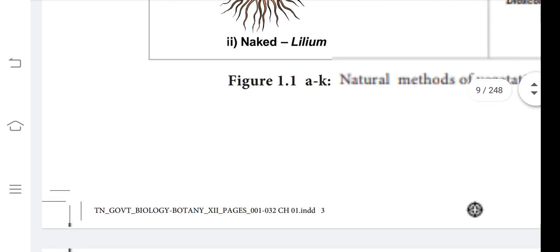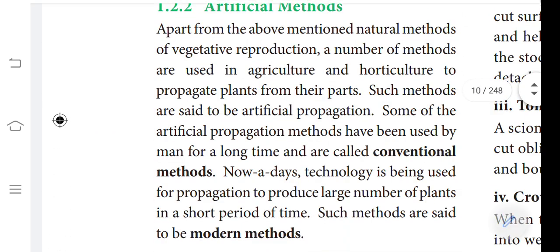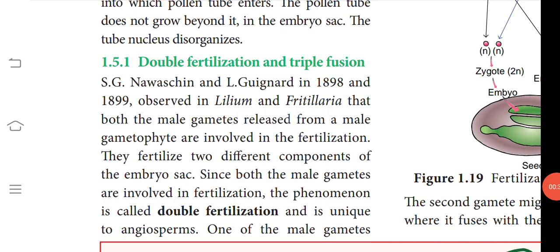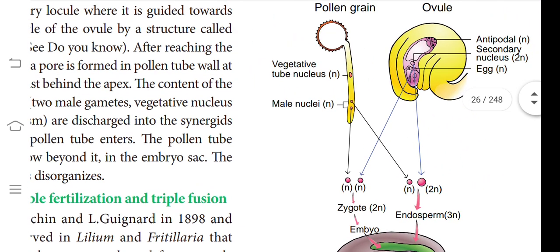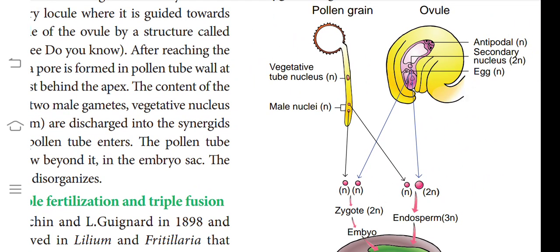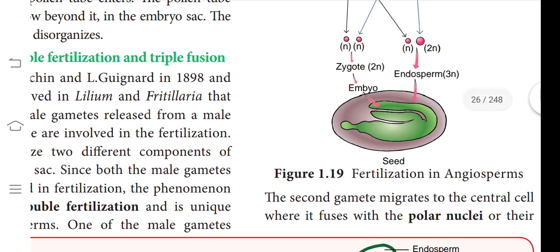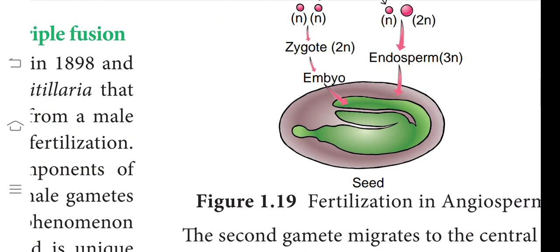If you have the book, you can have a look at page 1.5.1 where double fertilization and triple fusion is given — one of the most important questions. Why is it called double fertilization? The male gamete has two nuclei, both involved in fusion. You can see here the pollen tube is developing and it goes through the style to fertilize the ovary.